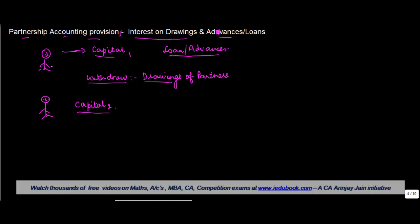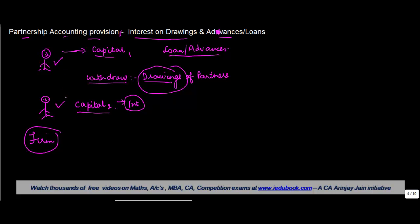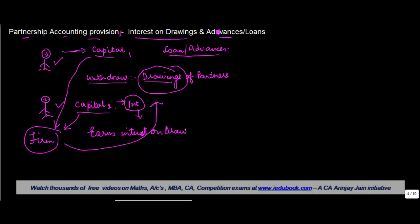The money taken out by the partner from the firm is known as drawings. Now, a firm is a distinct entity from the partners. So when the partners gave capital to the firm, they said they are going to take interest at whatever rate. Similarly, the firm will also say that if you take out the money — if you do the drawings — you have to pay interest.